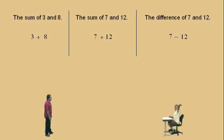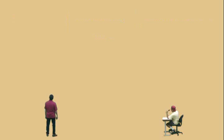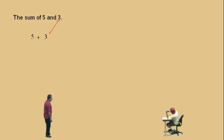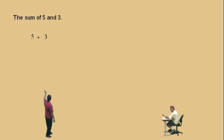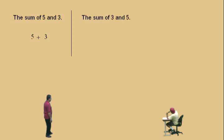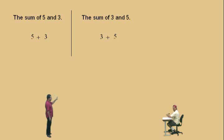Very nice there, Charlie. Let's do another one. The sum of 5 and 3. Now notice here, when you translate, there's a specific order that you have to put the numbers in. When you have the sum of 5 and 3, notice the 5 comes first and then the 3. The sum of 3 and 5. Notice that the 3 is first, and then the 5.